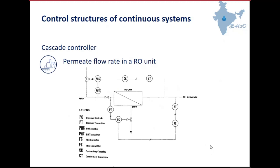Cascade controllers are very useful in reverse osmosis units — for example, when you want to control the permeate flow rate. Here you have a flow transmitter measuring the flow. To control this flow, you can act on the pressure at the inlet, and this inlet pressure is at the same time the set point of a controller that acts on a valve that changes the pressure. This valve changes the pressure and produces a change in the permeate flow.